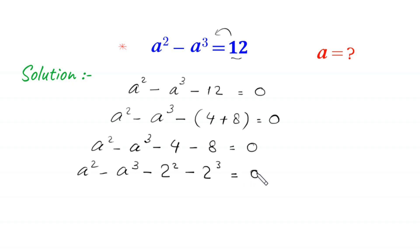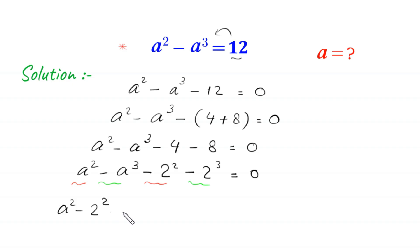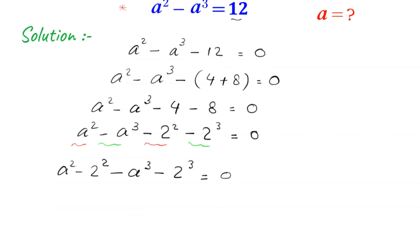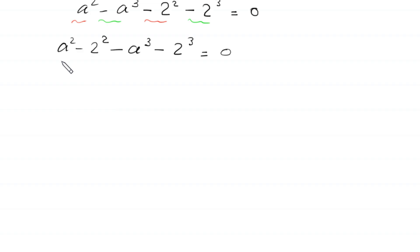Now we combine these two terms: a squared and negative 2 squared, and we combine these two terms: negative a cubed and negative 2 cubed. This becomes a squared minus 2 squared minus a cubed minus 2 cubed is equal to 0. We group the first two terms (a squared minus 2 squared) and the last two terms (negative a cubed and negative 2 cubed).